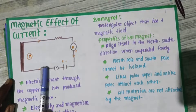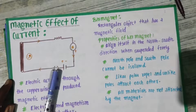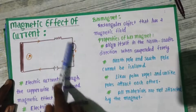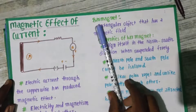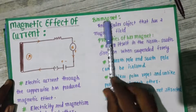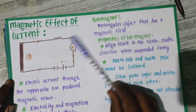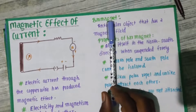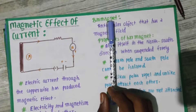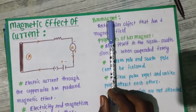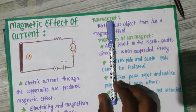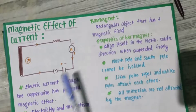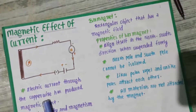When we are passing the current through the circuit, the magnetic compass needle starts to deflect. So the electric current through the copper wire has produced a magnetic effect.